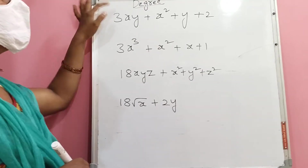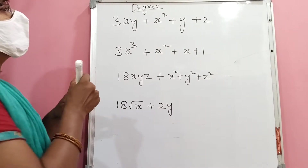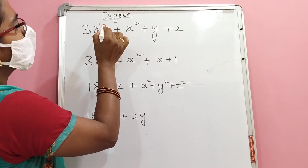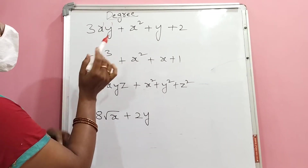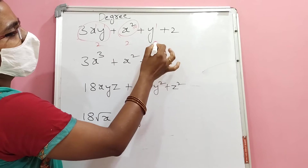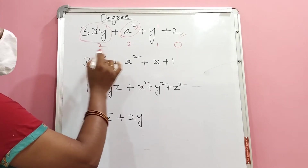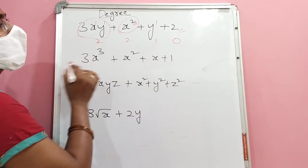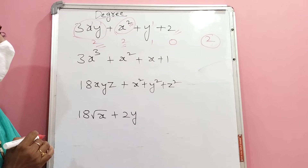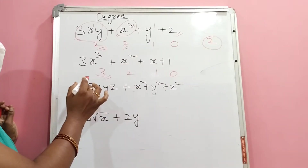Here, degree of a polynomial. Already we studied degree of an algebraic expression — it is the same here. Degree means the highest power among all terms. For example, in the first polynomial the powers of each term are 2, 1, and 0, so the degree is 2. In the second polynomial the term degrees include 3, 2, 1, and 0, so the highest degree is 3. That polynomial's degree is 3.